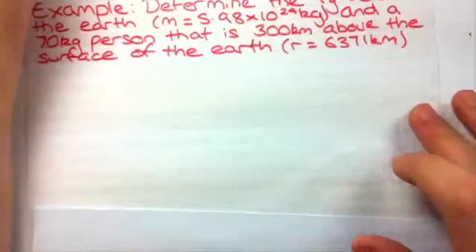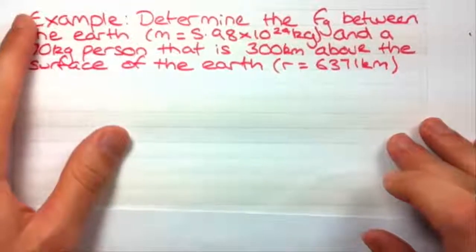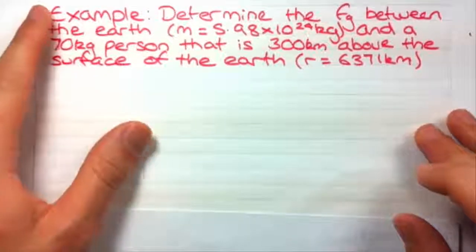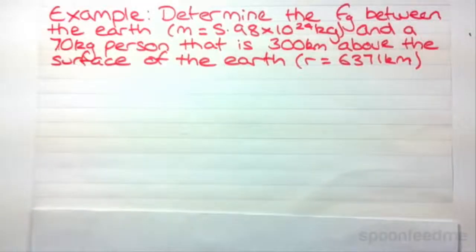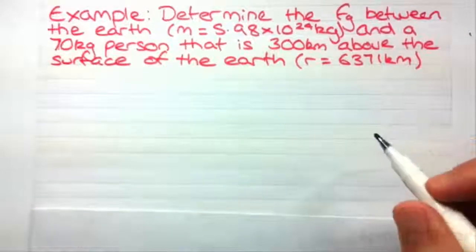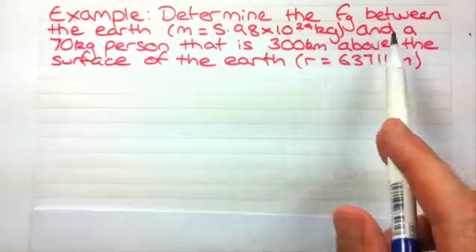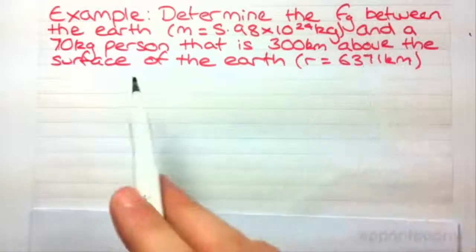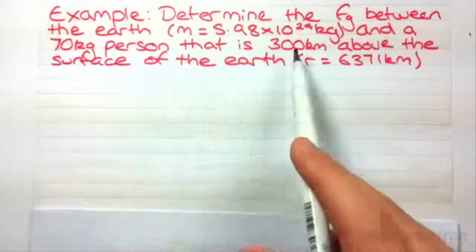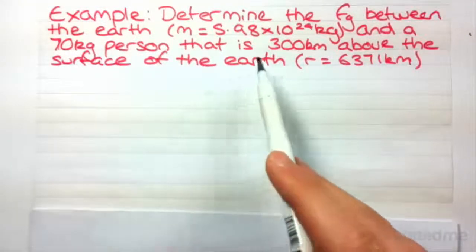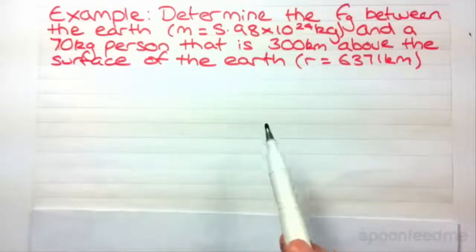These numerical examples aren't really so popular in the gravitational topics. But this one might help you to conceptualize the formula a little bit better. So we've got determine the force of the gravitational attraction between the Earth, there's its mass, and a 70 kilogram person that is 300 kilometers above the surface of the Earth.